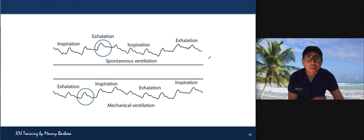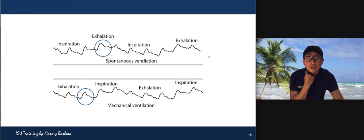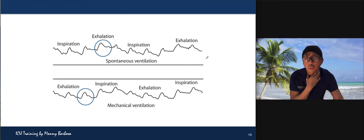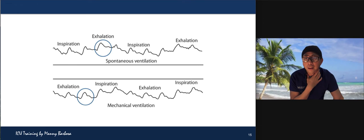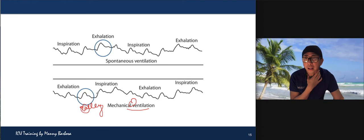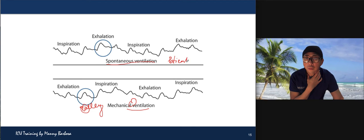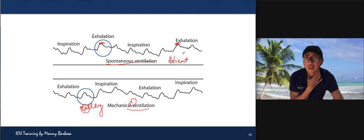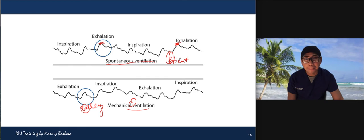When reading wedge pressure in a patient on mechanical ventilation, obtain the measurement during exhalation — at the valley of the waveform. For a spontaneously breathing patient, read it at the peak after exhalation. Remember: V for ventilation = valley; P for patient = peak.